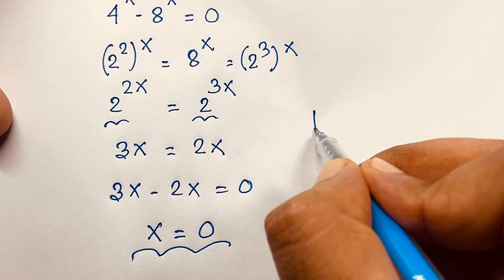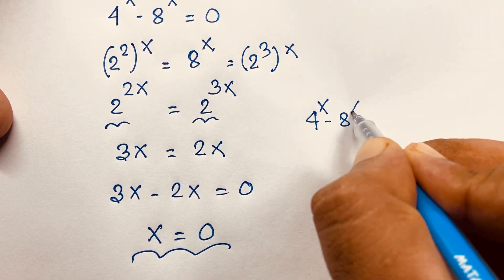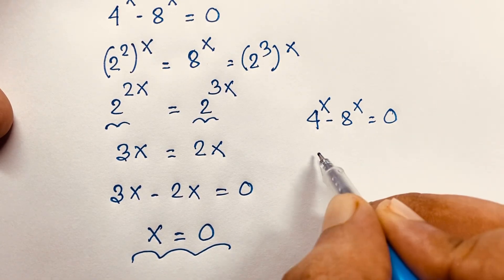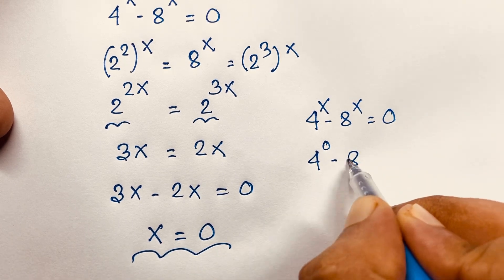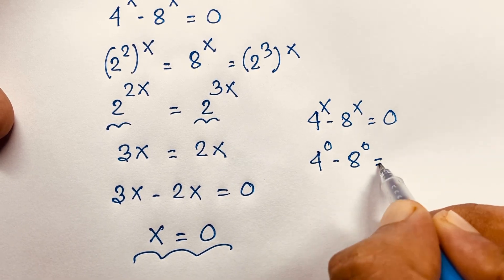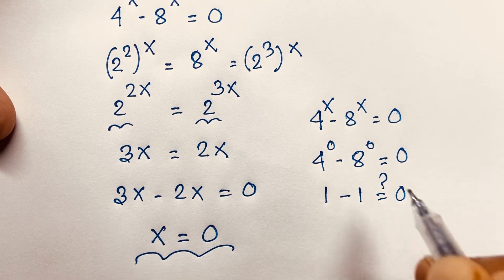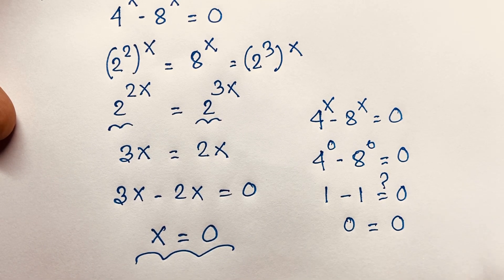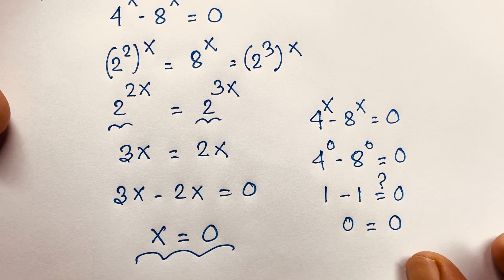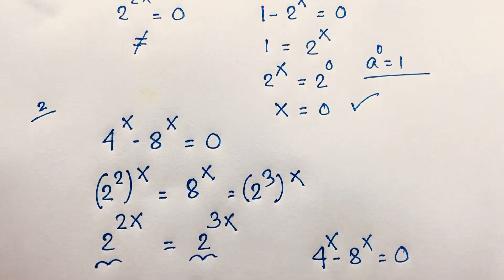Let's verify our answer. It will be 4 to the power x minus 8 to the power x is equal to 0. Substituting x equals 0: 4 to the power 0 minus 8 to the power 0 is equal to 0. Then 1 minus 1, which is 0, so 0 is equal to 0. Left-hand side and right-hand side are both equal, so x is equal to 0 is confirmed.